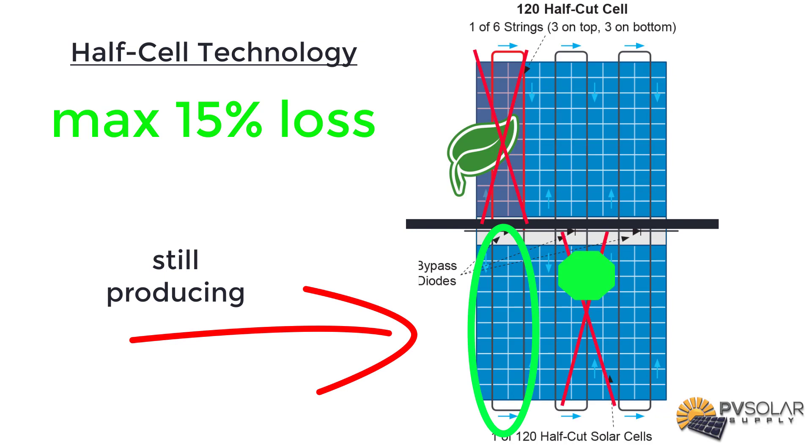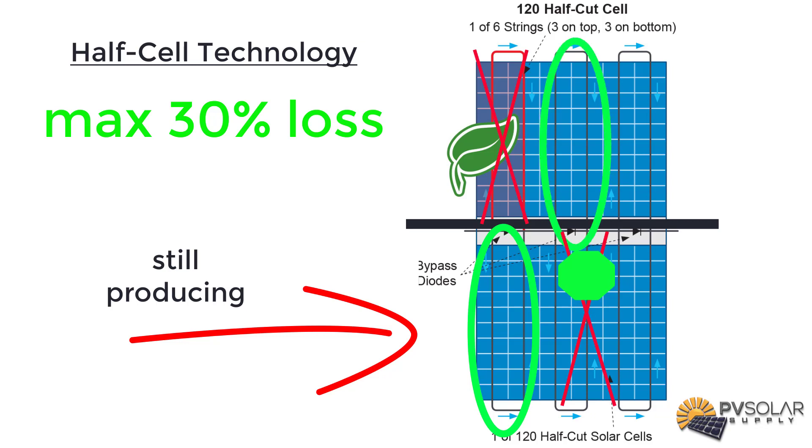The other shading, where we lost 60% on a standard panel, here we only lose 30% or maybe even less. Now, where we lost the total production, 100% of it, here on a half cell split module design, we are only losing 50%.